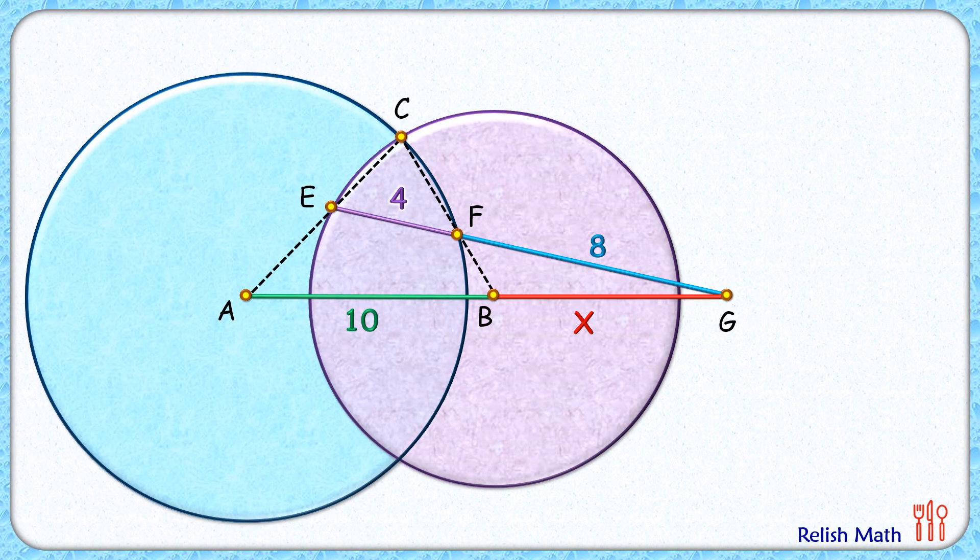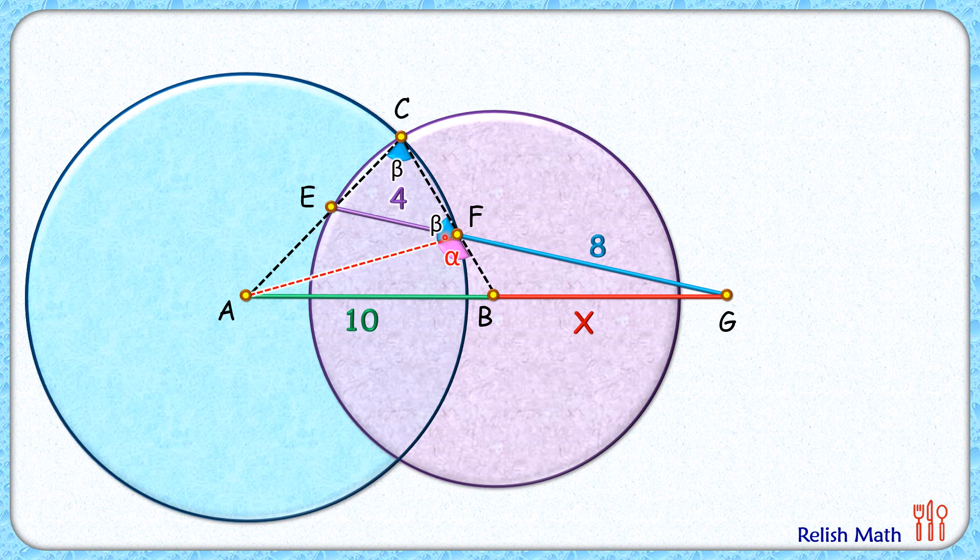Let's check this simple and elegant solution. Start by joining AF here. This angle F, let's assume, is alpha degrees, and its supplementary angle is beta degrees. With respect to the blue circle, AC and AF are both radii, and thus this triangle is isosceles, so angle C will be the same as beta degrees.